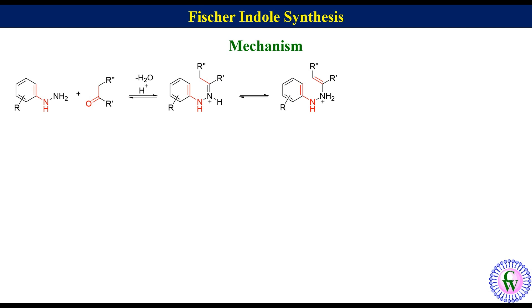We know that a 1,5-diene system under heating conditions undergoes a [3,3] sigmatropic shift. So this system will undergo a [3,3] sigmatropic shift like this to produce a non-aromatic rearranged species, which immediately aromatizes to produce 1-(2-aminoaryl)propan-2-iminium ion.